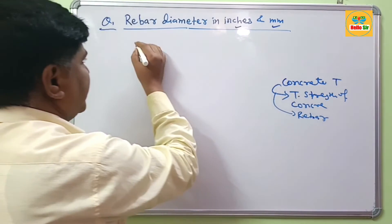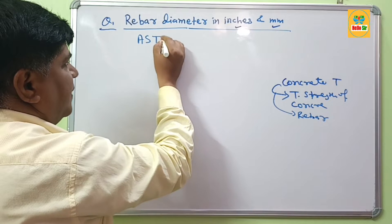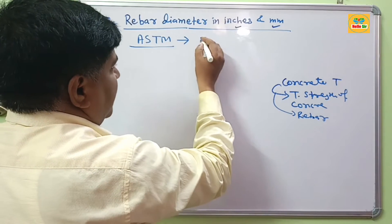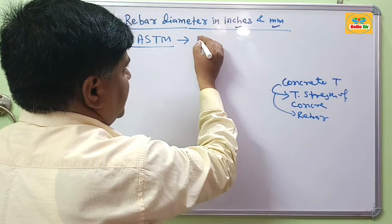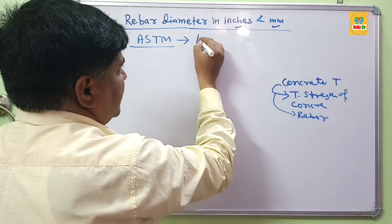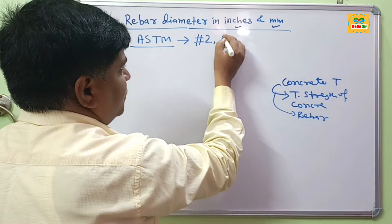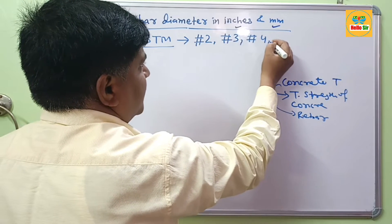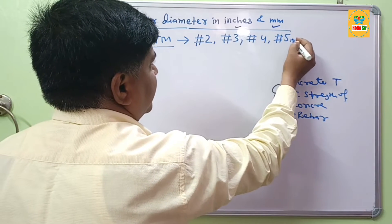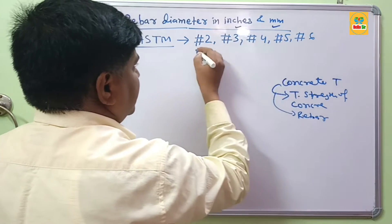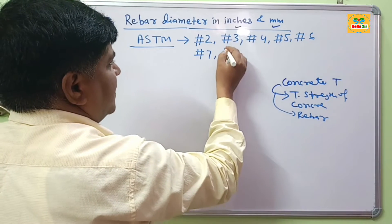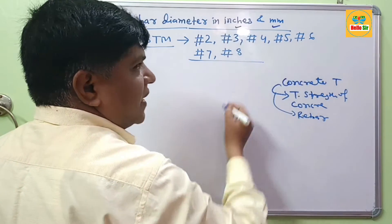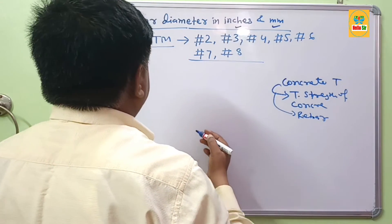As per ASTM standard — American Society for Testing Materials — there are different sizes of rebar represented: number 2, number 3, number 4, number 5, number 6, number 7, number 8, and so on. This covers rebar diameter and their sizes.